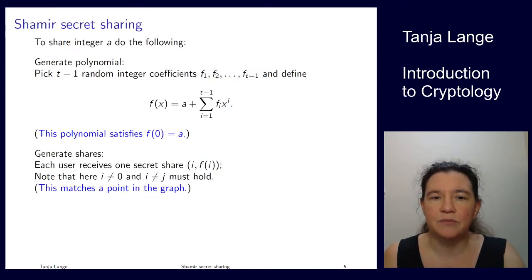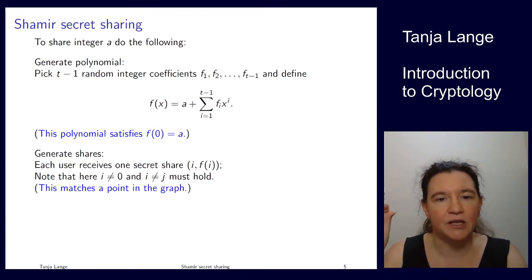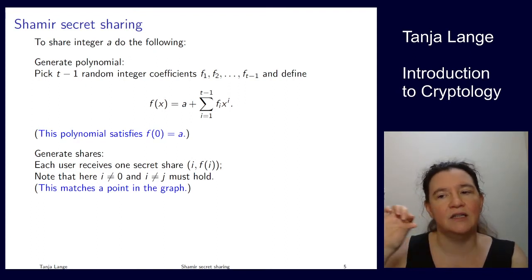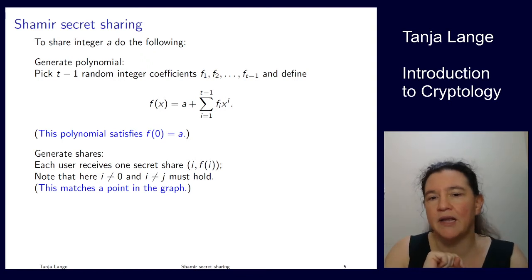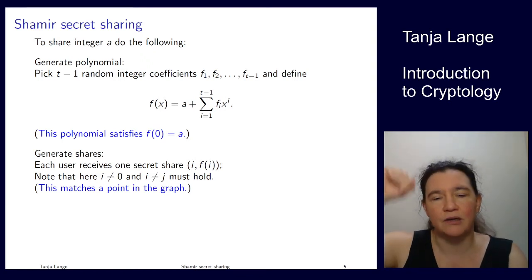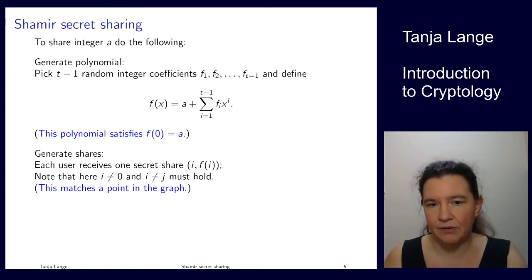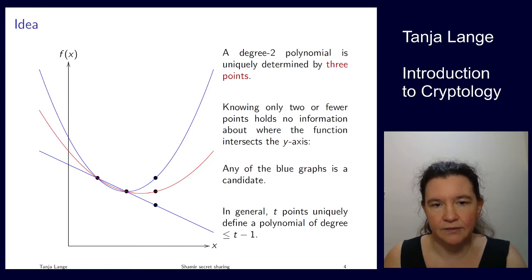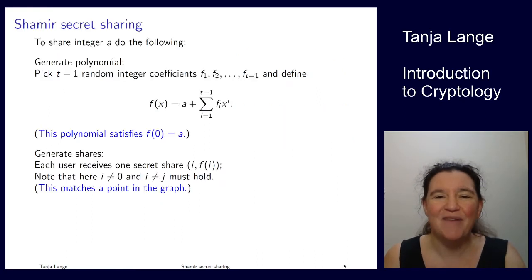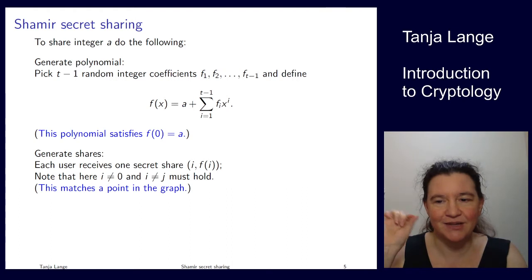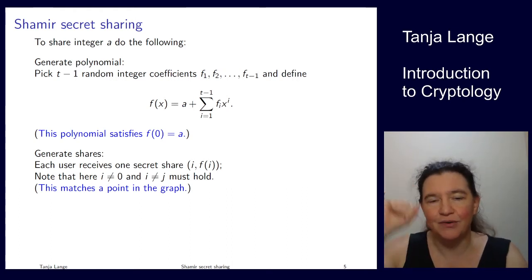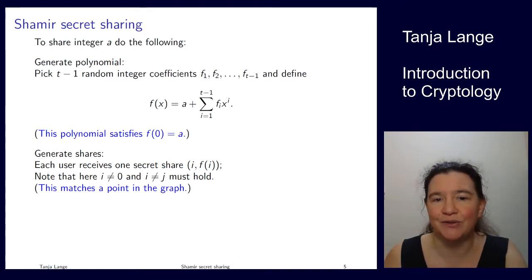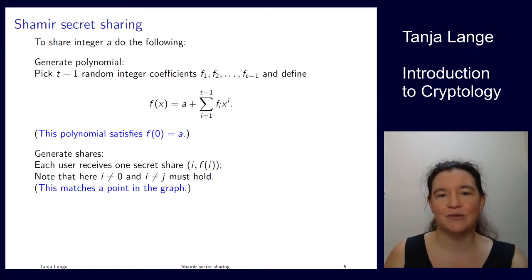Each of the n users gets one point on the x-axis — the index i — and the matching y-value f(i). So user i gets the pair (i, f(i)), matching the dots on the graph. We must not give anybody the point at zero, because f(0) equals a, which is the secret. So i equals zero is excluded.